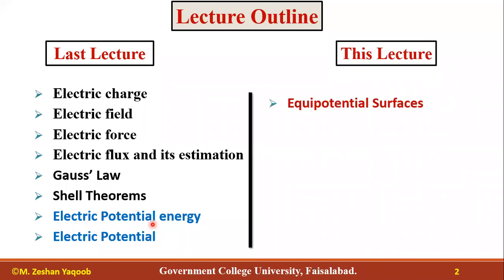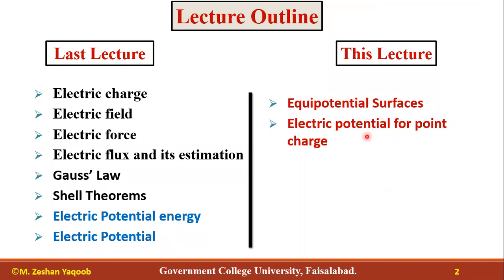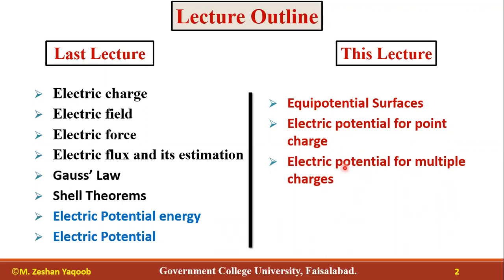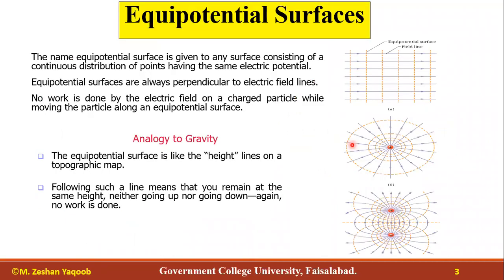Today we are going to discuss equipotential surfaces, then electric potential for a point charge, and electric potential for multiple charges. The name 'equipotential surface' is given to any surface consisting of points having the same electric potential. In simple words, an equipotential surface is a surface where every point has the same value of electric potential.